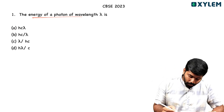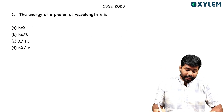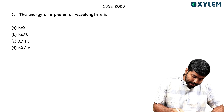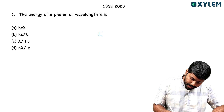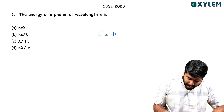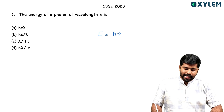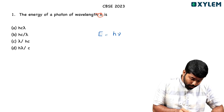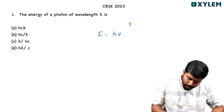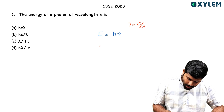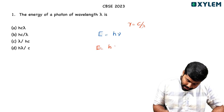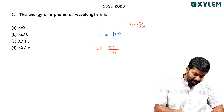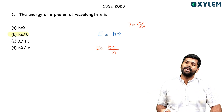The energy of a photon of wavelength lambda. Our equation is energy E equals h-nu, where nu is frequency. In terms of lambda, the relation is nu equals c by lambda, so E equals hc by lambda. The correct option is B.